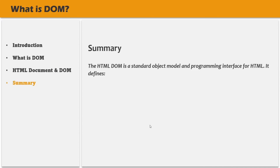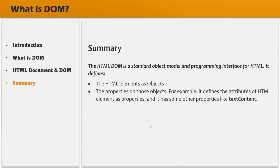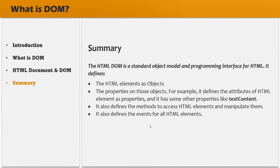To summarize, the HTML DOM is a standard object model and programming interface for HTML. It defines HTML elements as objects, it defines the attributes of HTML elements as properties, and it has properties like text content to store the text written within opening and closing HTML tags. It also defines the methods for accessing and manipulating HTML elements, and it defines the events for all HTML elements. In simple words, the HTML DOM is a standard for how to access, change, add or delete HTML elements to or from the web page. This was a high-level overview of what DOM is. From the next lecture, we are going to learn how to access and manipulate DOM elements using JavaScript.